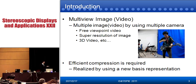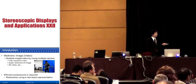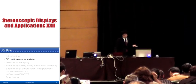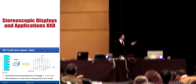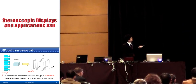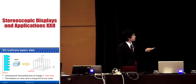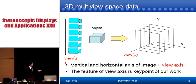So efficient compression is required. We realize efficient compression by using the new basis representation. First, we define the 3D multiple space data. Please look at the left side of the video. Multiple cameras capture the same object, and the multiple images form this 3D multiple space data. This data has a vertical and horizontal axis of image, plus a view axis.